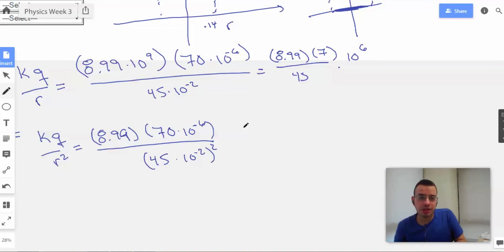Alright. So then here, instead of 10 to the 6th, we're going to have 10 to the 8th. 10 to the 9th over here. And then 45 will be squared.